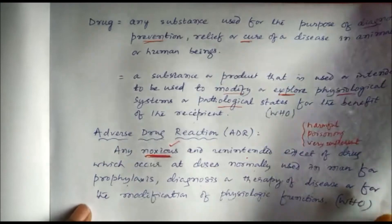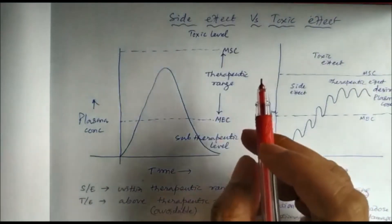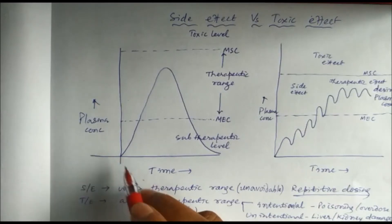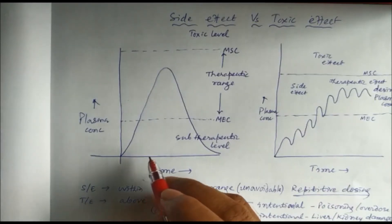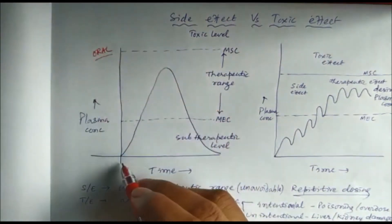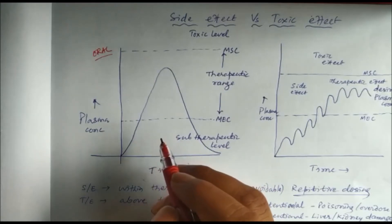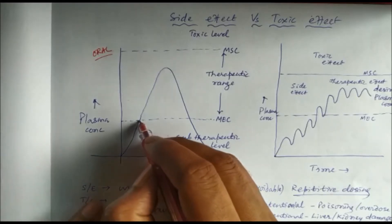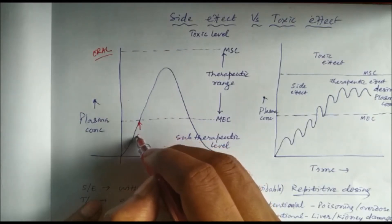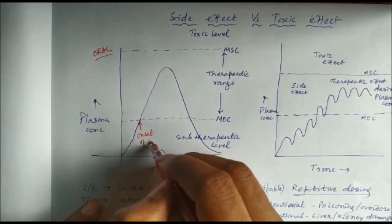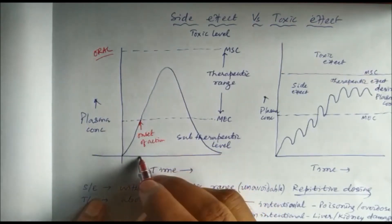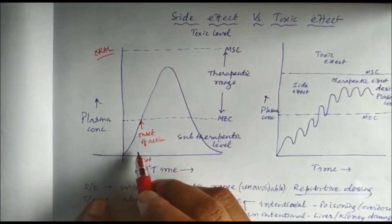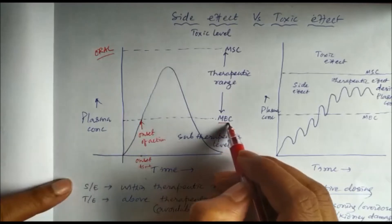Now let us discuss side effect and toxic effect using a plasma concentration versus time curve. For a single oral dose, suppose we are suffering from a headache and take a tablet — it takes 30 minutes to show its action. That time is called the onset of action, and the corresponding time is the onset time. When we take a drug, it takes some time to reach the minimum effective concentration.